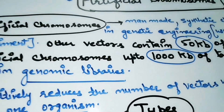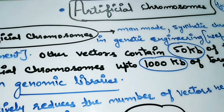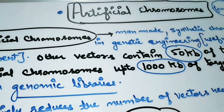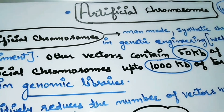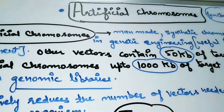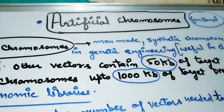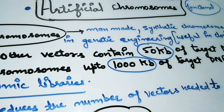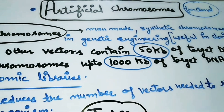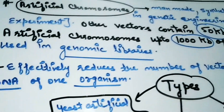What we do is we insert artificial chromosomes as a vector, and we insert that vector into the host DNA. The major difference between other vectors like phage vector or plasmid vector and artificial chromosomes used as a vector is that other vectors contain only 50 kb of targeted DNA, whereas artificial chromosomes can contain up to 1000 kb of targeted DNA.